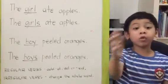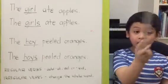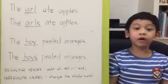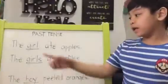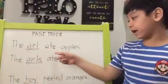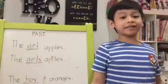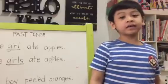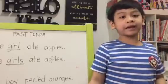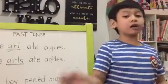Second rule: for irregular verbs, we change the whole spelling of the verb. For example, the girl ate apple. Like sit becomes sat, drink becomes drank, and sleep becomes slept, and lots and lots more.